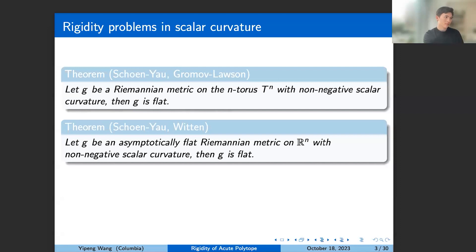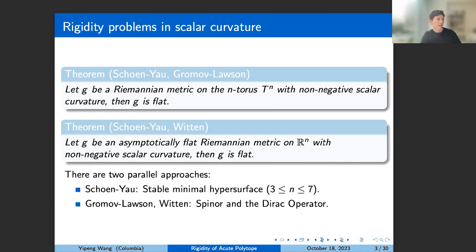Another example, modeled on a complete non-compact manifold, is the famous positive mass theorem solved by Schoen–Yau and Witten, which says that if you have an asymptotically flat Riemannian metric on Euclidean space with non-negative scalar curvature then it has to be flat. For both problems there are two parallel approaches: Schoen–Yau used variational techniques of minimal hypersurfaces, restricting to dimensions three through seven, while Gromov–Lawson and Witten used spinor techniques and the Dirac operator approach.